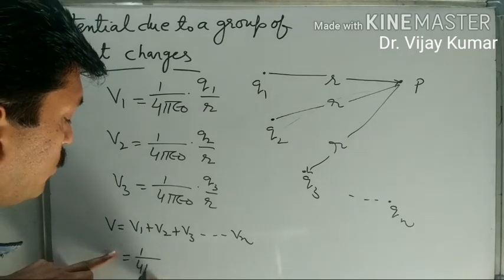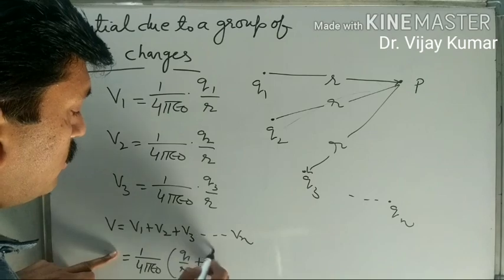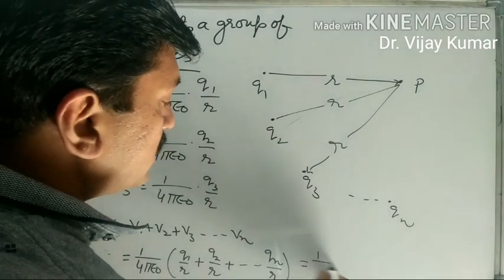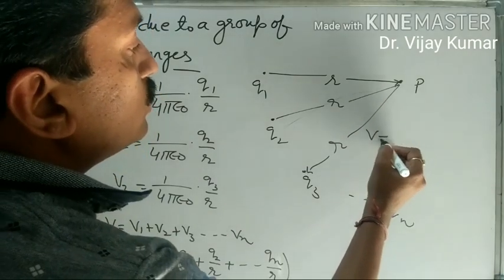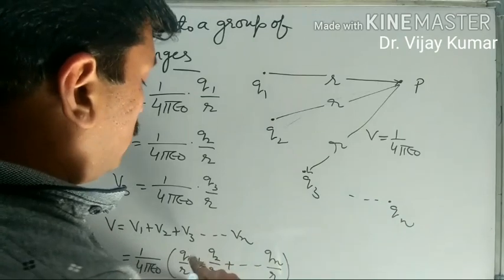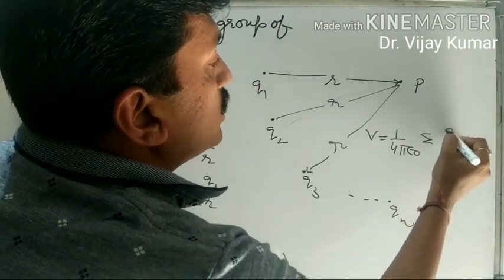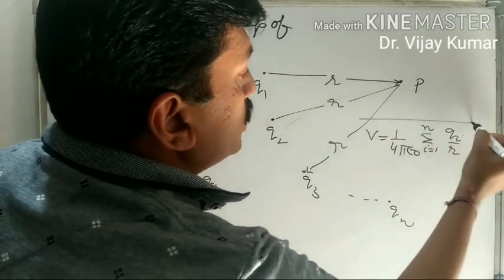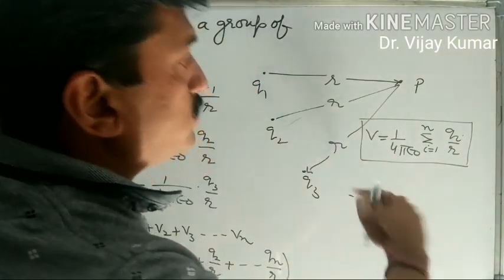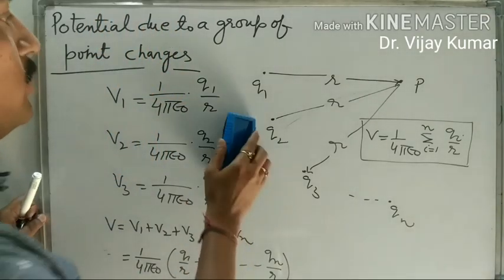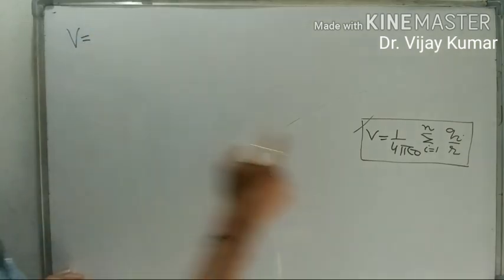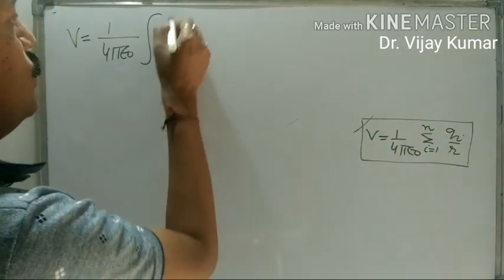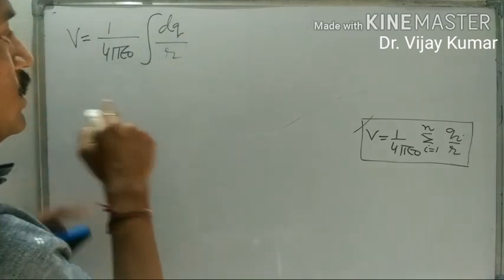We can write: 1 upon 4 pi epsilon naught times (Q1 upon R plus Q2 upon R plus up to Qn upon R). In general, V equals 1 upon 4 pi epsilon naught times sigma Qi upon R, where i varies from 1 to N. This is total potential due to the group of charges. If charges are distributed uniformly, the summation converts into integration and Qi converts to dQ upon R.